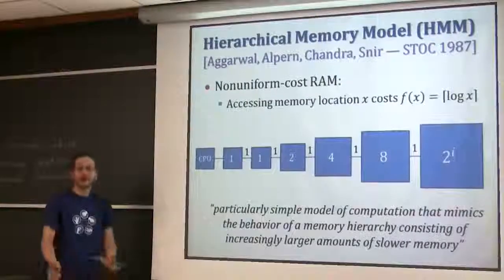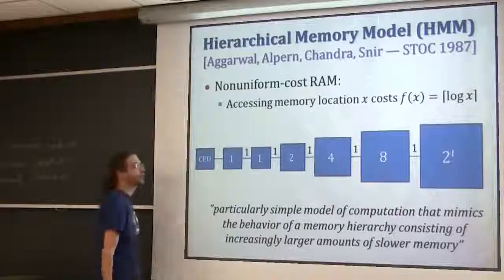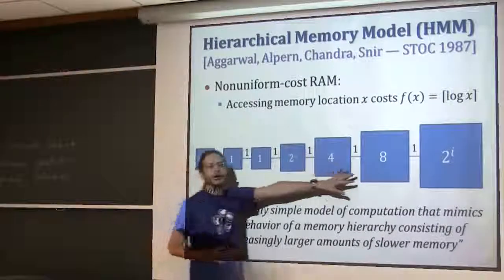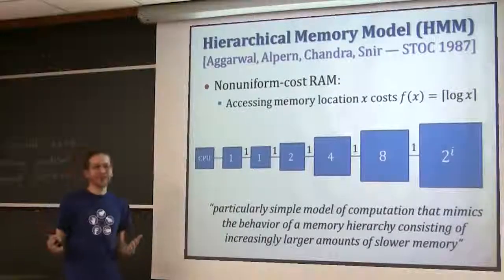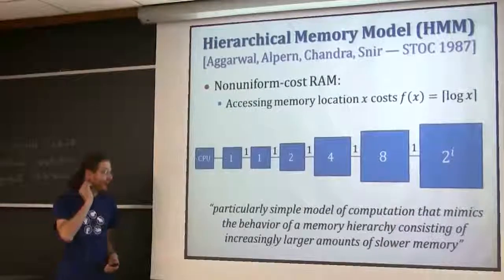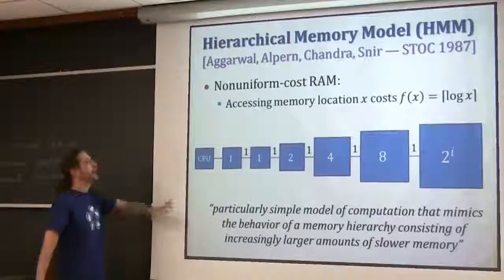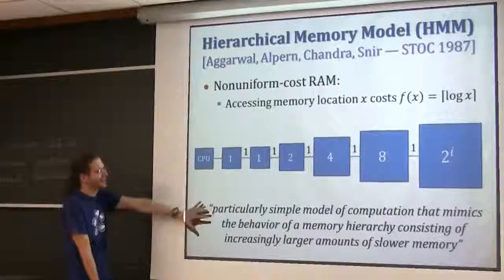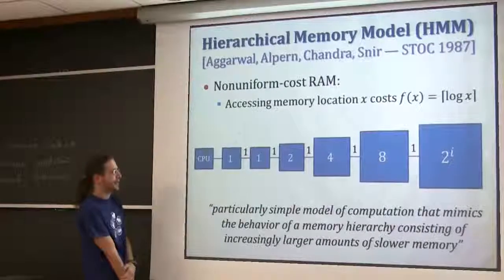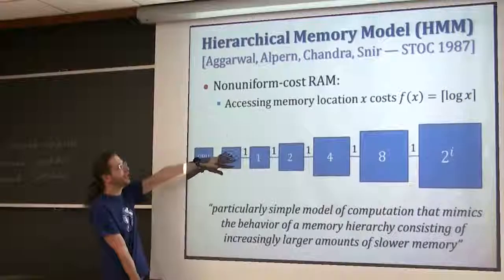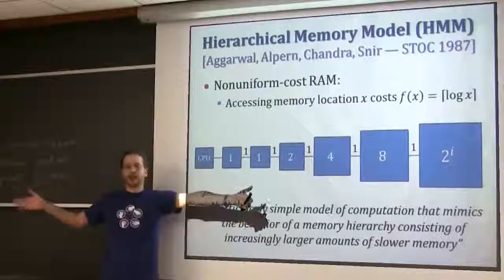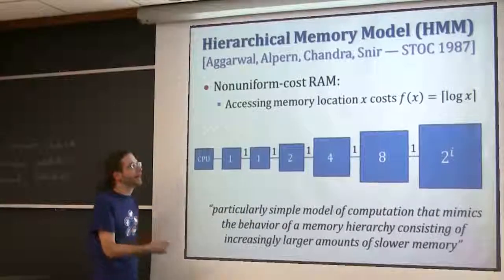Let's move on to a different model - this did not catch on, but it's fun for historical reasons. The question is: what about a deeper memory hierarchy? Two levels is nice, but we should really understand multiple levels. One of my favorite weird models is the HMM. It's particularly simple. It's a RAM model: if you want to access position x in the array, you pay f of x. In the original definition, that's just log x - so the first item is free, the second costs one, the next two cost two, the next four cost three, and so on.